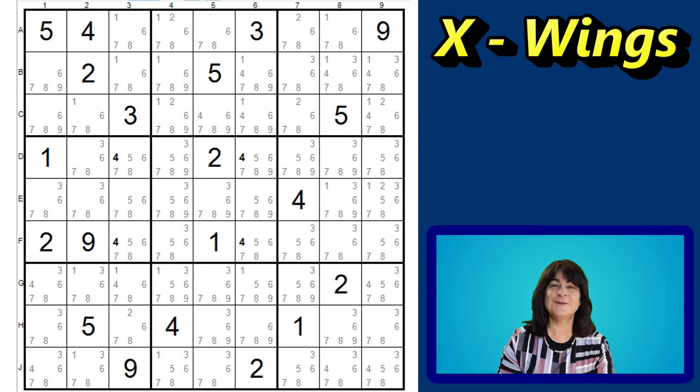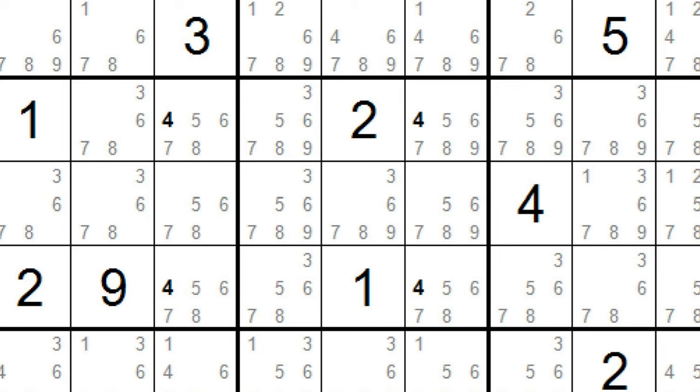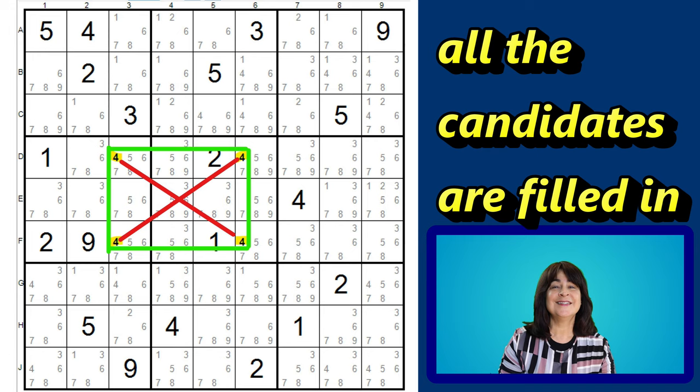Hello, and welcome to this video on X-Wings, also known as the Rectangle Rule. It's actually a 2 by 2 rectangle that forms an X pattern. Take a look at this grid.